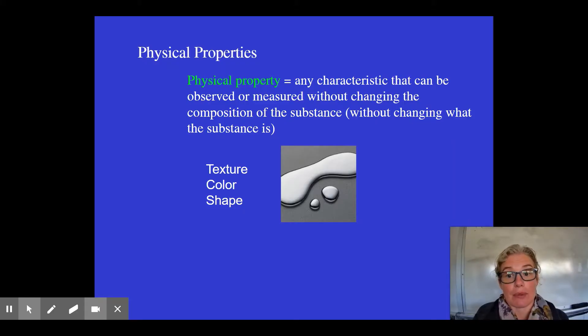We could describe its texture, its color, and that it will take any shape because it's a liquid, all without doing a chemical change and altering what it is. It's still mercury while we're making those observations.